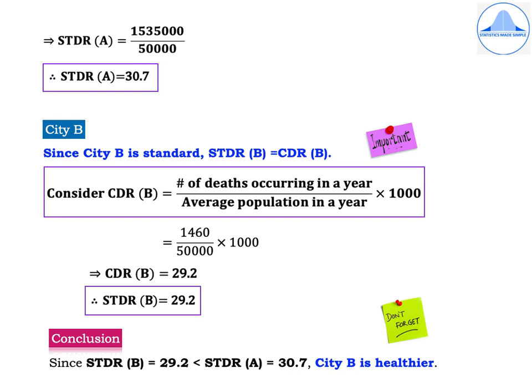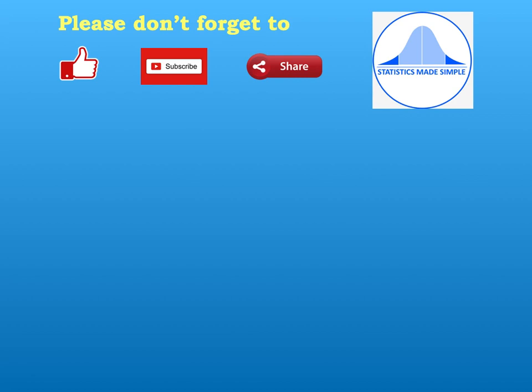Note that for problems 5 and 6, you can use the STDR formula for both populations — it is not compulsory to use STDR = CDR for whichever population is standard. Irrespective of the method used, the final answer for STDR will remain the same. The only way to understand statistics is to practice it many times. Thank you for watching — look out for my next video on infant mortality rate, neonatal mortality rate, and maternal mortality rate.